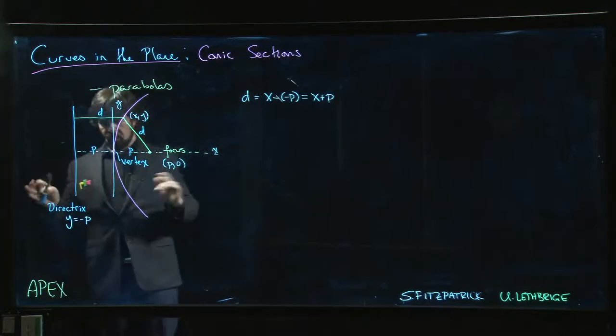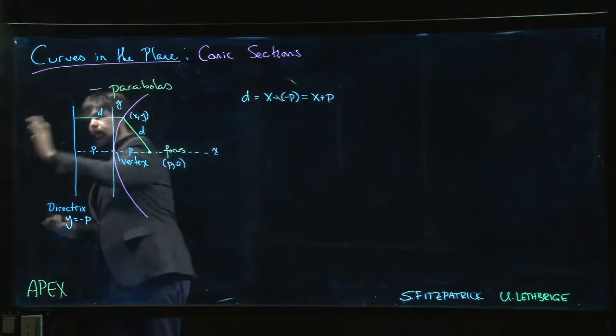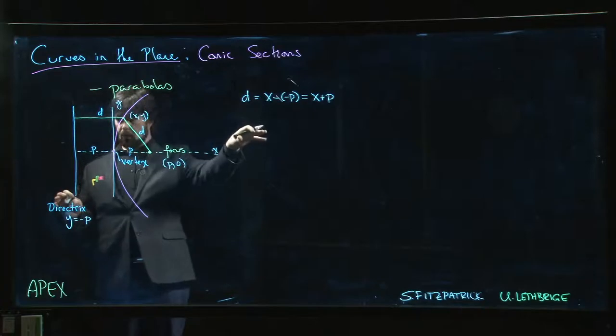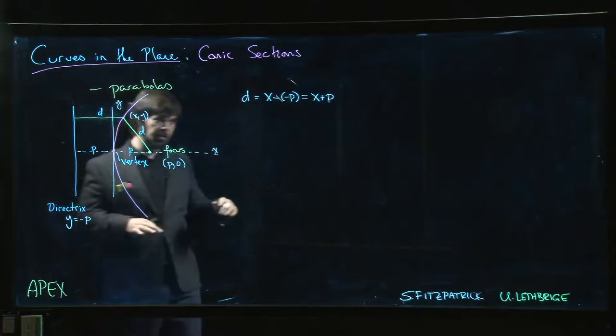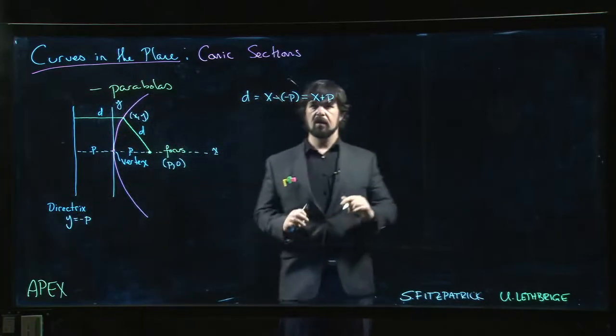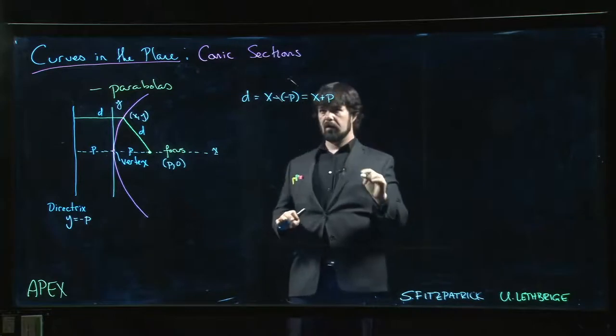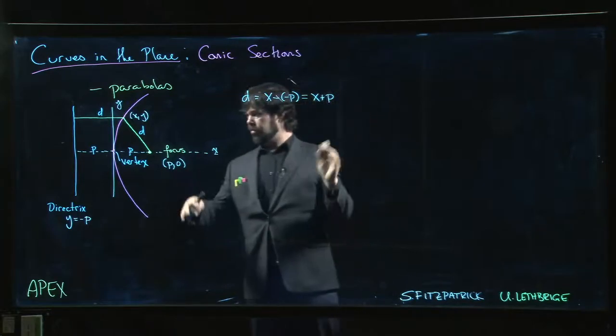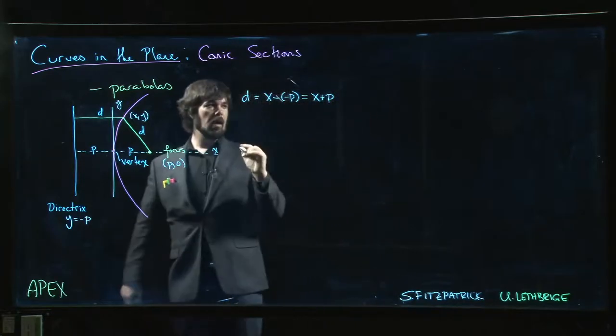If we wanted to account for more general orientations, like maybe a parabola might also open the other way, then we might want an absolute value in there to guarantee things are positive. But at least the way I've drawn it, this is already a positive value. p is positive, x is positive, and that works out.